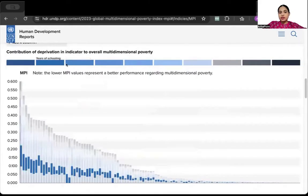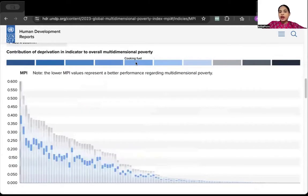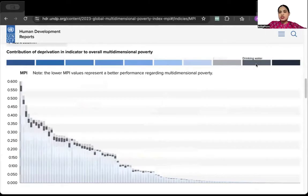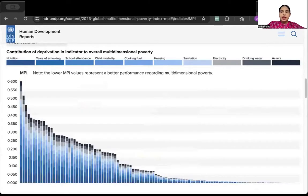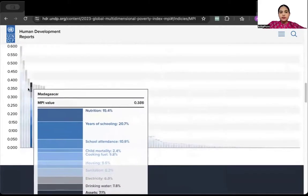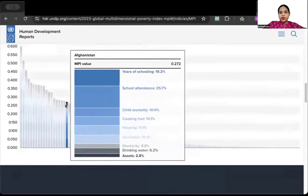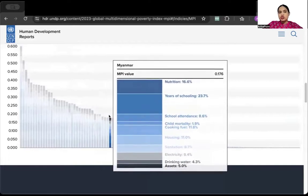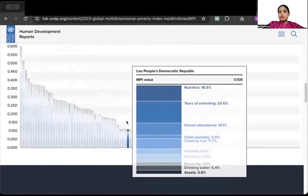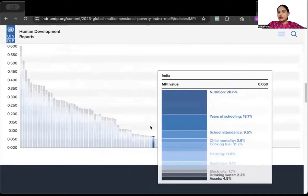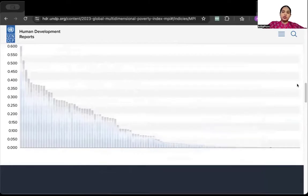When we talk about nutrition, schooling and school attendance, both of these are marked here. Then you had six indicators under the standard of living: cooking fuel, housing, sanitation, electricity, drinking water and assets. And together if you see, then you can go ahead and notice the value for different countries. For each country, the segregation is given to you. So you can just scroll around and see where is India, where is Bangladesh, where is Nepal, where is US, where is UK. This is India's nutrition, year of schooling, school attendance, and the MPI value is also given to you.